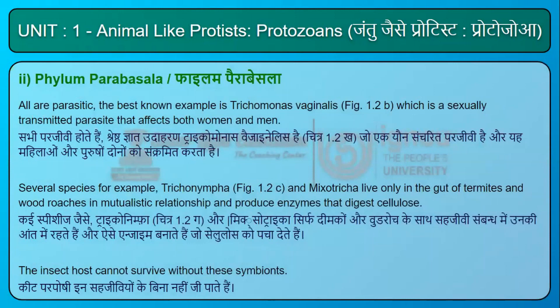All are parasitic. The best known example is Trichomonas vaginalis (Fig. 1.2b), which is a sexually transmitted parasite that affects both women and men. Several species, for example Trichonympha (Fig. 1.2c) and Mixotricha, live only in the gut of termites and wood roaches in a mutualistic relationship and produce enzymes that digest cellulose. The insect host cannot survive without these symbionts.